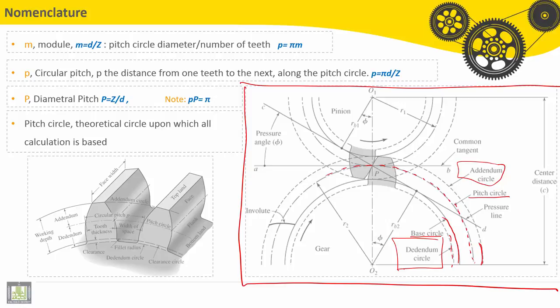We have pitch circle for the gear and we have also pitch circle for the pinion. These both pitch circles are tangent here on this point P.